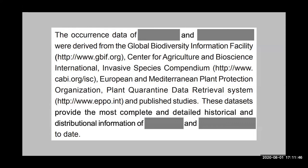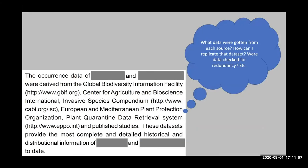'Occurrence data of this species and that species were derived from [sources]; these datasets provide the most complete and detailed historical distributional information of those species to date.' What data were obtained from each source? How precisely could I replicate that data? Were the data checked for redundancy between sources?